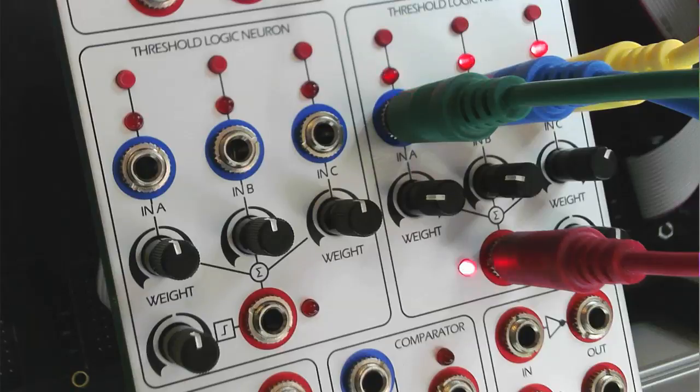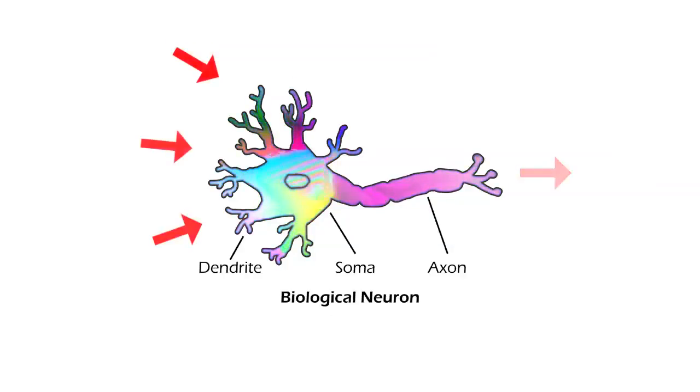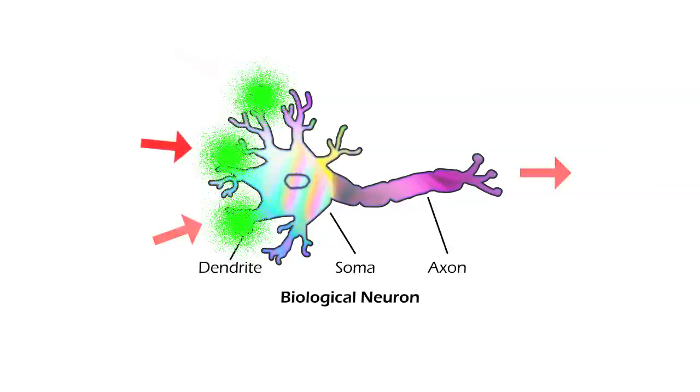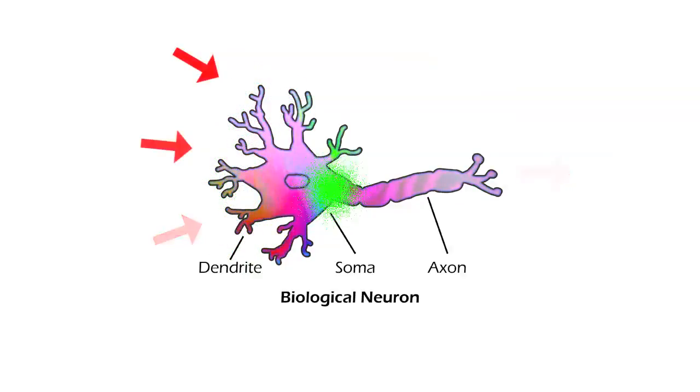In a biological neuron, information received from the synapses is weighted by the dendrites. This information is then summed in the soma and pulses are fired when a threshold is met in the axon.